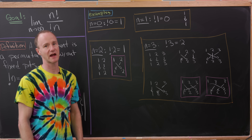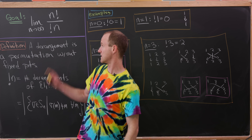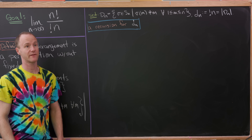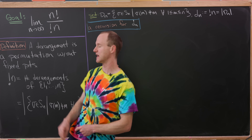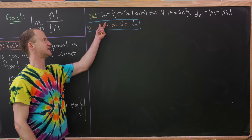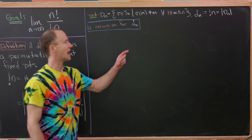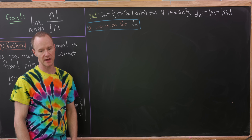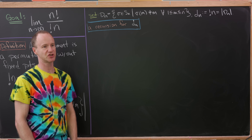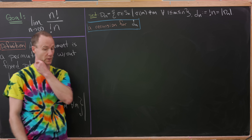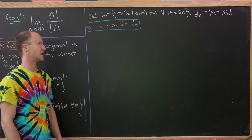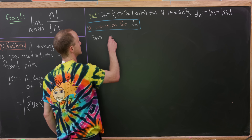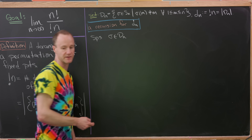Now that we've got an idea of what's going on, let's work towards this limit. We're going to fix some notation. Let D_n be the set of all derangements of the set containing 1 through n, and let little d_n be the size of D_n — in other words, the subfactorial of n. Our first goal is to find a recursion for d_n, and we're going to do this combinatorially.